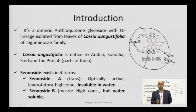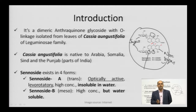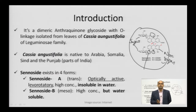Senosides, the plant constituent, exist in four forms: Senoside A, Senoside B, Senoside C, and Senoside D. Senoside A is a trans form, optically active, and levorotatory — it rotates the plane of polarized light towards the left. It is available in high concentration in the plant but is insoluble in water. Senoside B is the meso form and also occurs in high concentration, but it is water soluble.